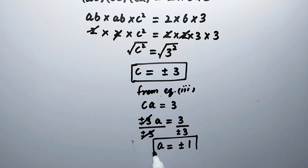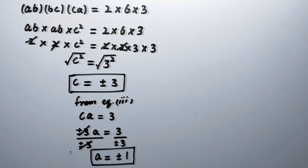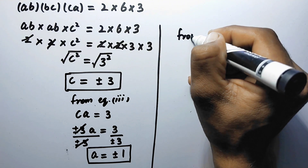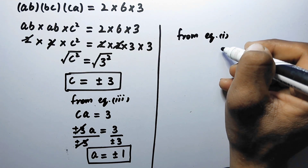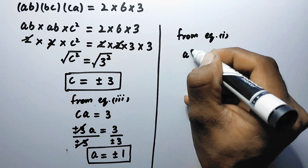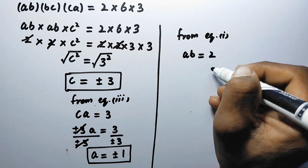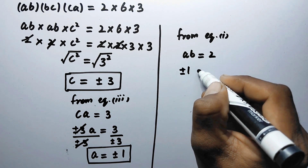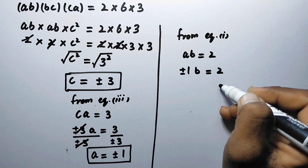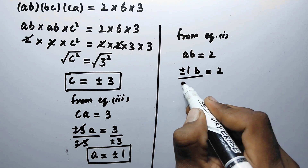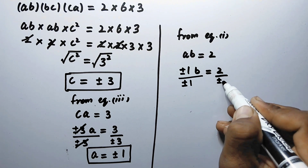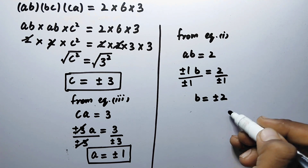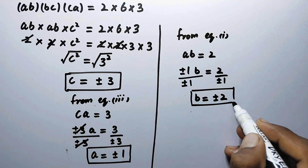That is the value of a. Now from equation number 1 we have a·b = 2. By putting the value of a here, the equation will be plus or minus 1 times b is equal to 2. We divide both sides by plus or minus 1, so here we will get b equal to plus or minus 2.